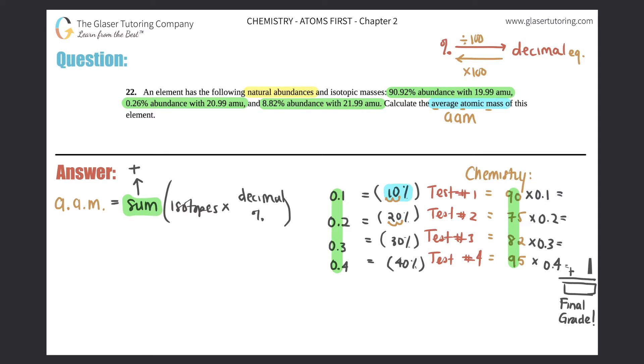So let's list them out. I'll just say that this one is isotope number one, this one is number two, and this one is number three. So we got 90.92%, and we have a mass AMU of 19.99. The next one is 0.26%, and that's with 20.99. And then the next one is 8.82%, and that's 21.99.